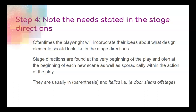Stage directions happen because a playwright incorporates their ideas about what design elements should look like. Stage directions are usually in parentheses and italics. They can be found at the very beginning of the play, at the beginning of each new scene, and sprinkled sporadically within the action. For example: 'He hands her a picture' — tells us someone needs a picture prop. 'She goes to the window' — tells us you need a window in the set. 'As they leave upstairs' — tells us you also need stairs in the set.